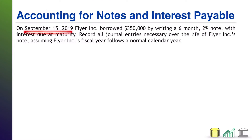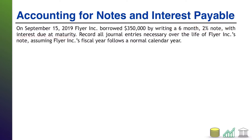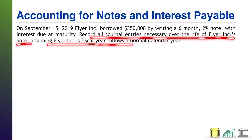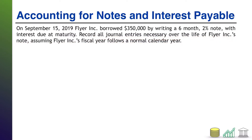On September 15, 2019, Flyer, Inc. borrowed $350,000 by writing a six-month 2% note with interest due at maturity. Your goal is to record all journal entries necessary over the life of Flyer, Inc.'s note, assuming Flyer, Inc. follows a normal calendar year for their fiscal year.